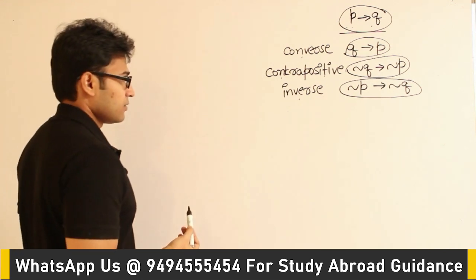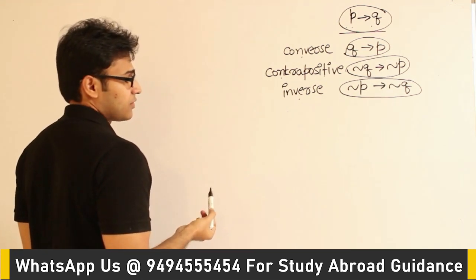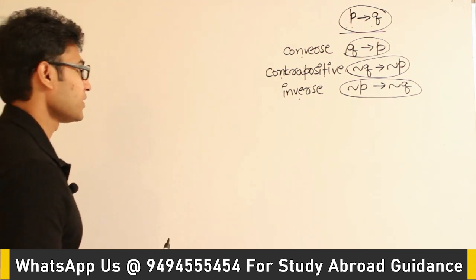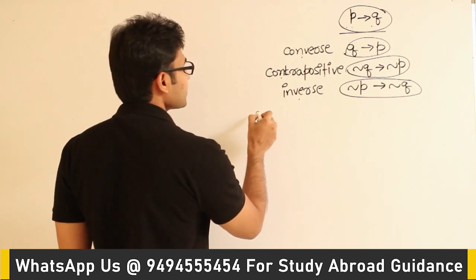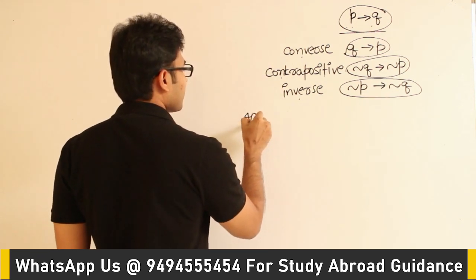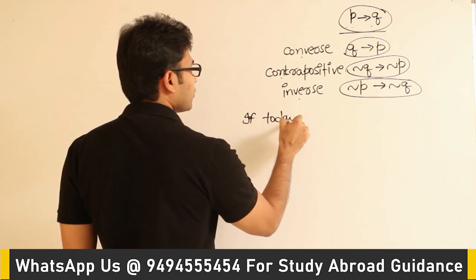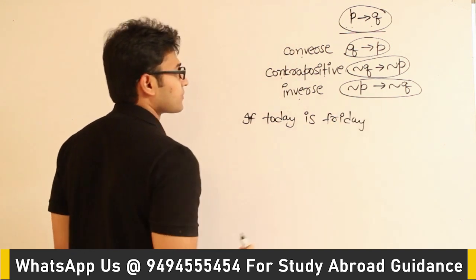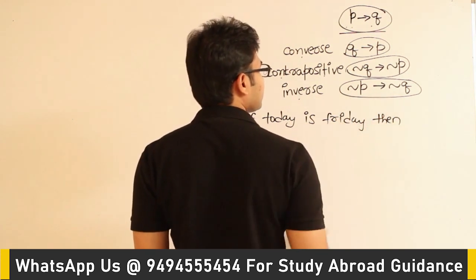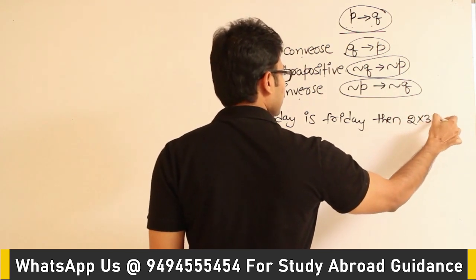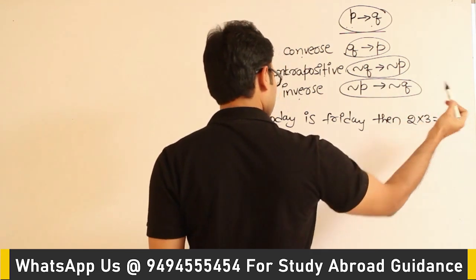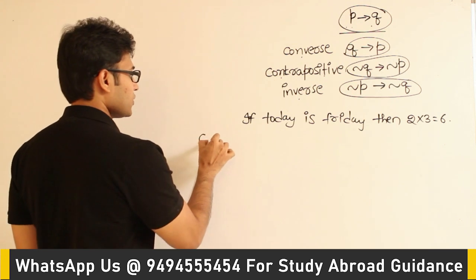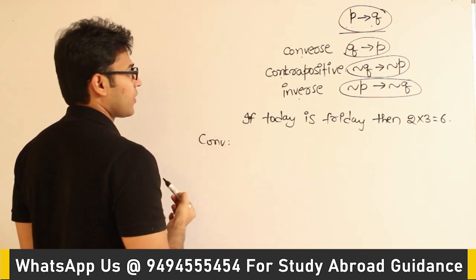Let's take an example which is not logical, since we are discussing predicate logic. The statement is: if today is Friday, then 2 into 3 equals 6. Let us say this is the statement given and now they have asked you what is the converse of it.